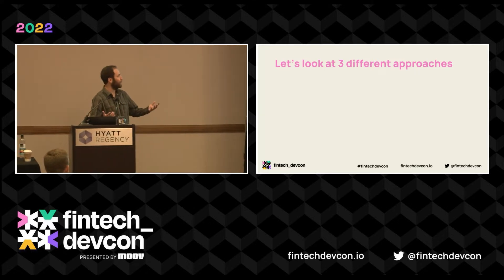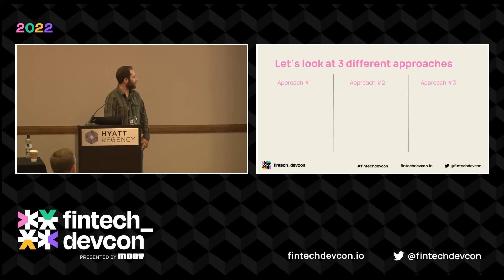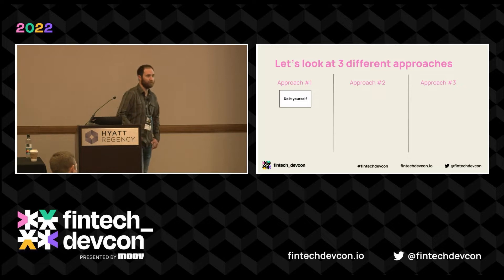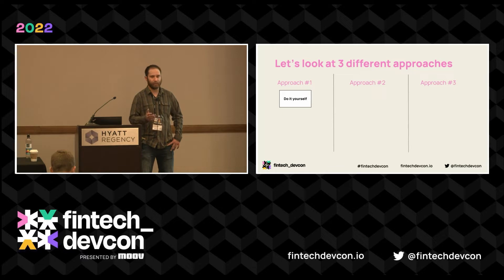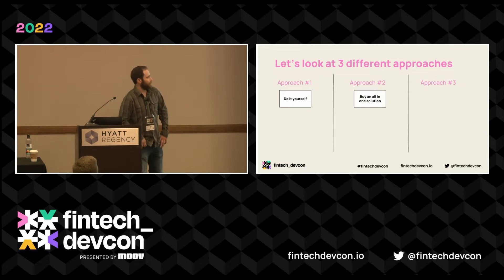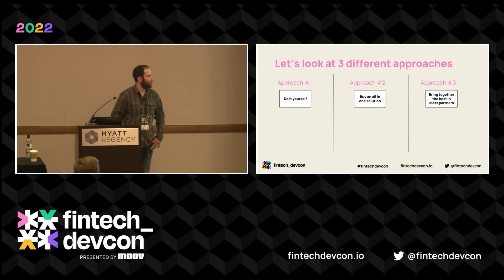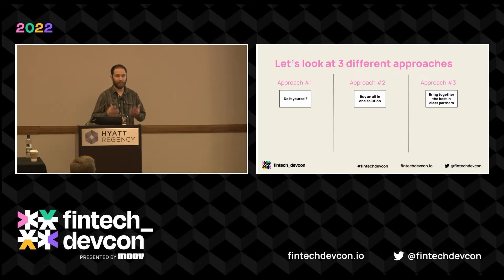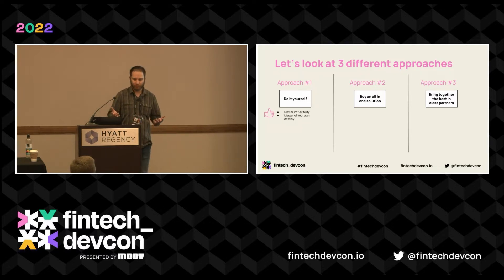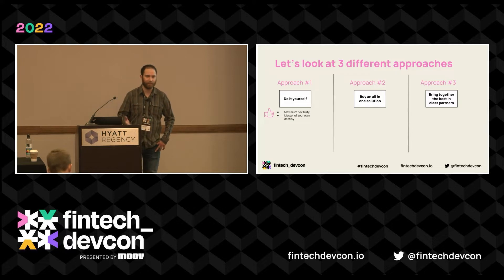With that in mind, there are three different approaches to building this. Approach one: do it yourself — the most complicated approach. You go out, establish your own bank partners, build your own platform. Very time-consuming and expensive — you're setting up bank relationships in each country, your own compliance program. Approach two: buy an all-in-one solution — work with a provider who gives you an out-of-the-box product, quick to market. Approach three: build it with a partner — bringing together providers that have already done this so you can go to market much quicker.